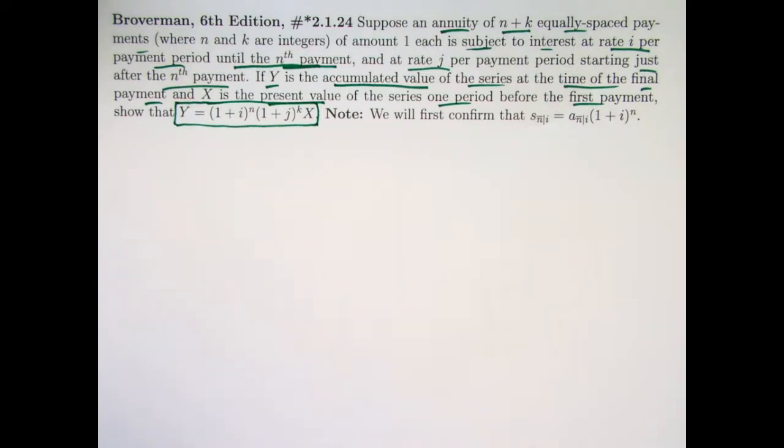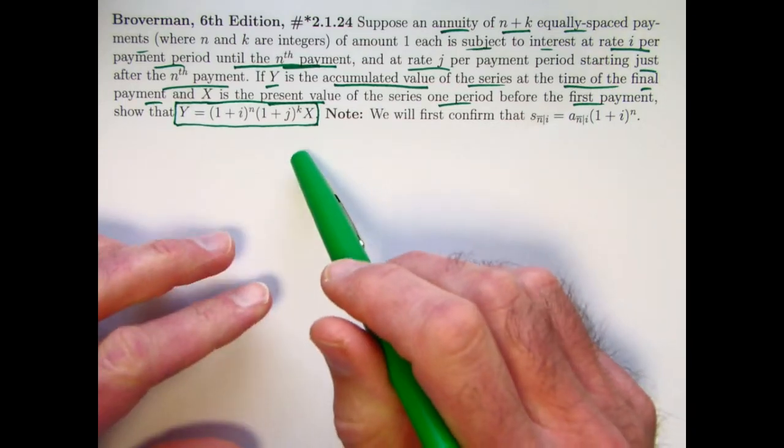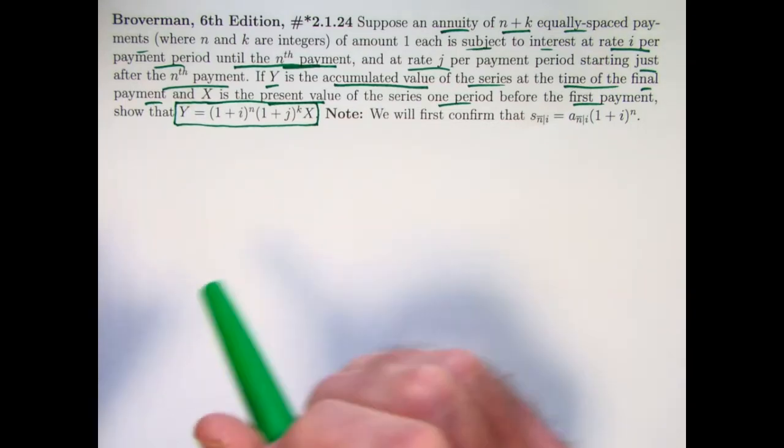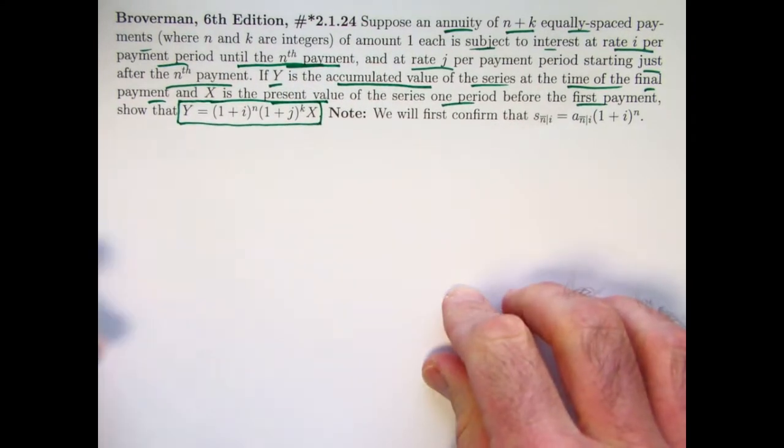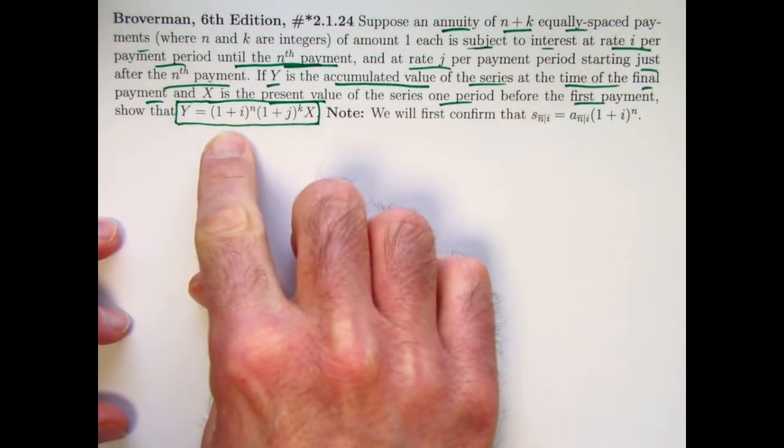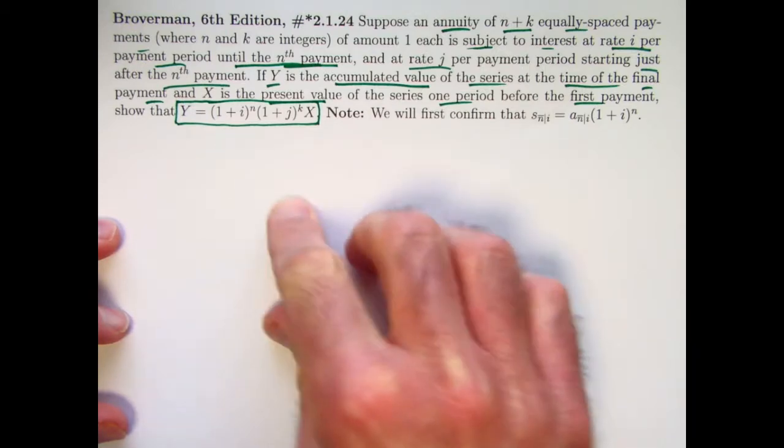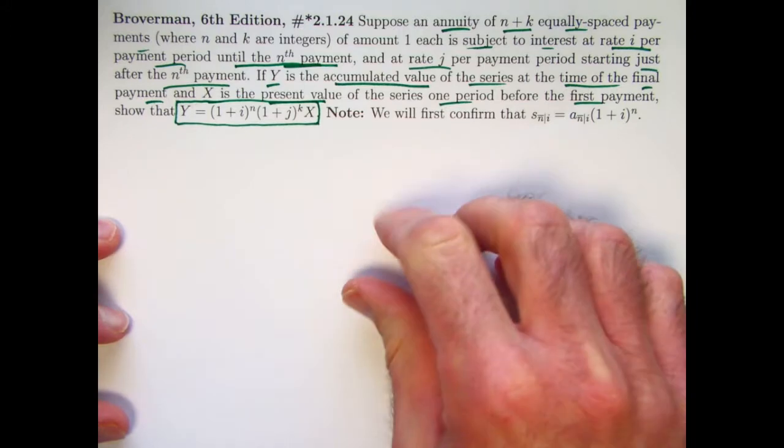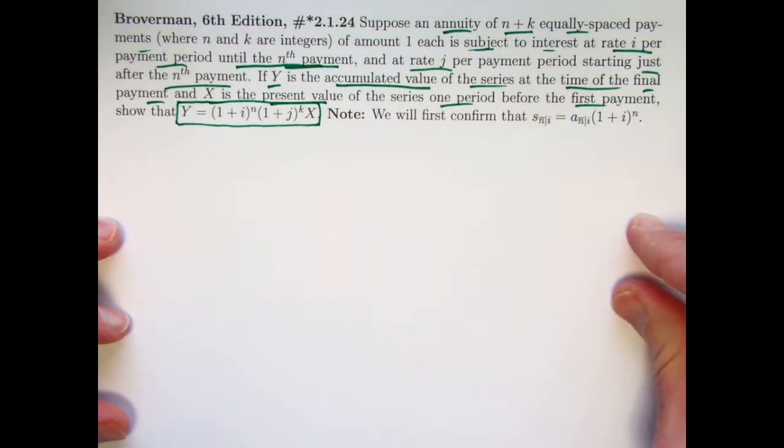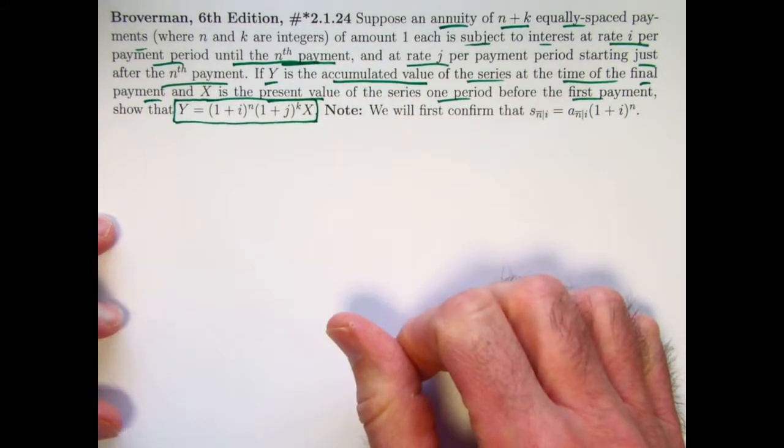Show that Y = (1+i)^n * (1+j)^k * X. If you briefly think about this it makes good sense. Essentially we take the present value X and push it forward in time, multiplying by the growth factor 1+i for each of the first n years, then multiplying by the new growth factor 1+j for the next k years.